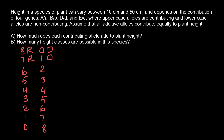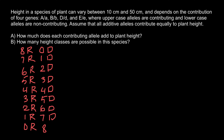So we have listed all classes, using R for recessive alleles and D for dominant alleles. The combinations go from eight recessive and zero dominant, down through six, five, four, three, two, one recessive, with corresponding increases in dominant alleles up to eight dominant and zero recessive.